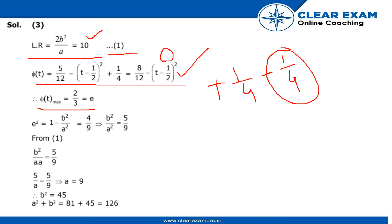we got the value for the maximum function value as 2/3 which is equal to eccentricity, that is e. Now the formula e² = 1 - b²/a² is used here because we have found the value of e.